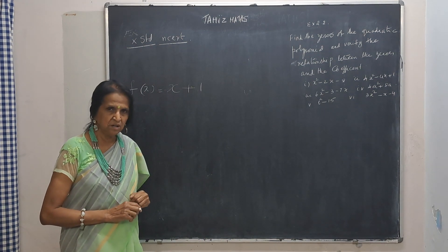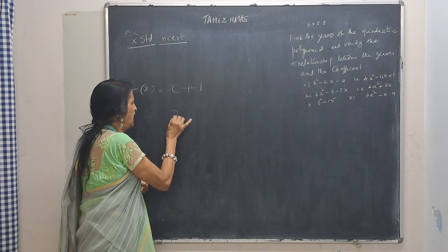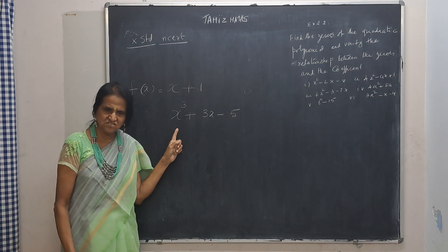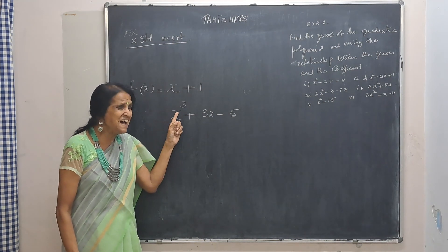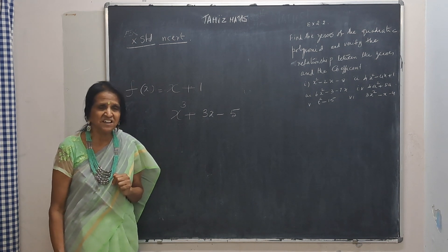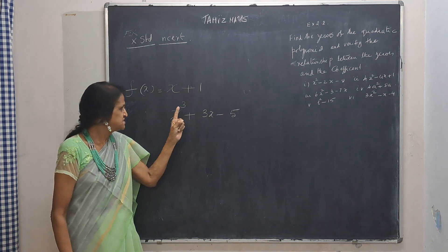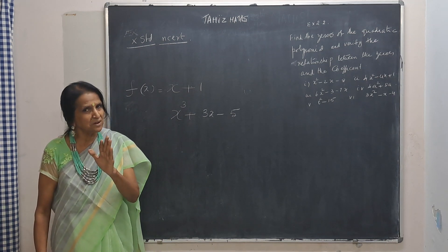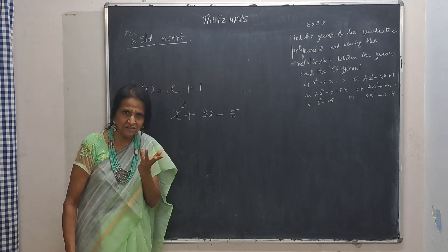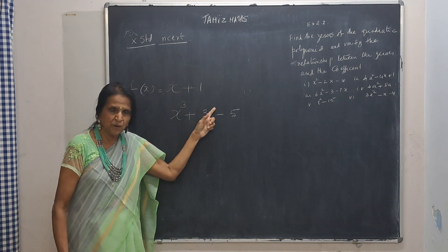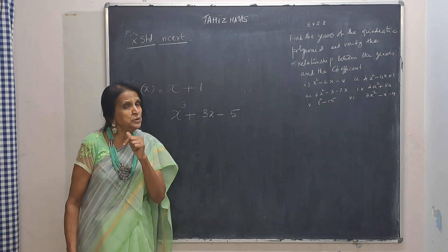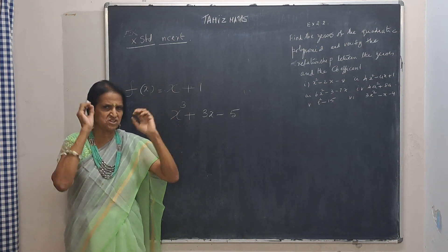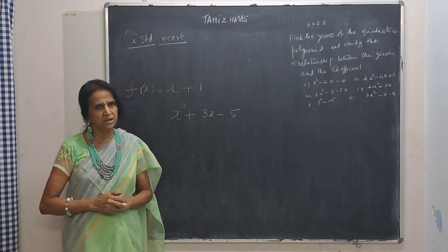If I have x cube plus 3x minus 5, here there are multiple indices — the index of x is 1, and the index of x cube is 3. The highest index value is the degree of the polynomial. So the degree here is 3, not 1. The highest natural number index value is called the degree of the polynomial.